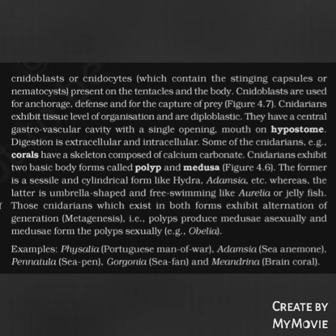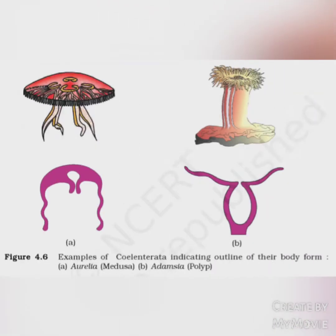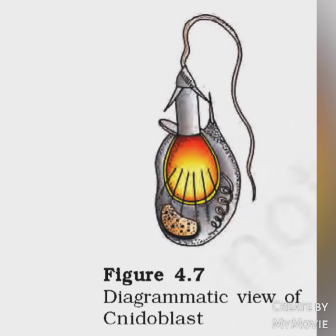Examples of Cnidaria: Obelia, Physalia (Portuguese man-of-war), Adamsia (sea anemone), Pennatula (sea pen), Gorgonia (sea fan), and Meandrina (brain coral). Figure 4.6 shows examples of Coelentrata indicating the outline of their body form: Aurelia (medusa form) and Adamsia (polyp form). Figure 4.7 shows a diagrammatic view of a cnidoblast.